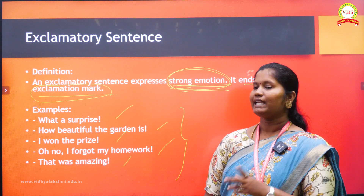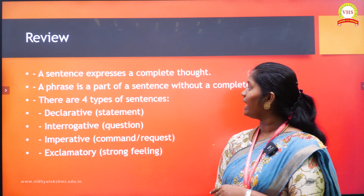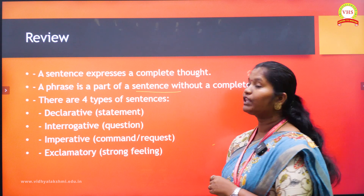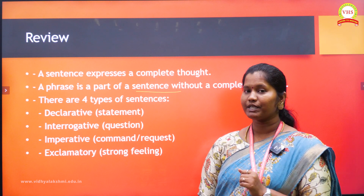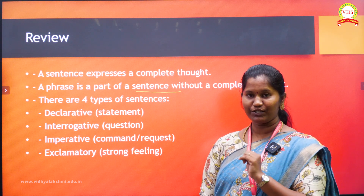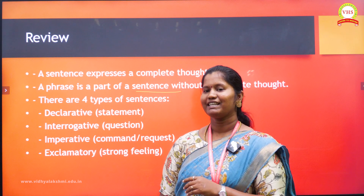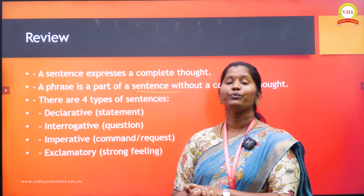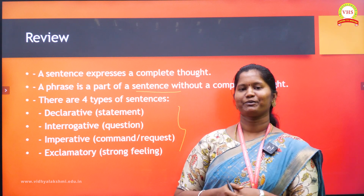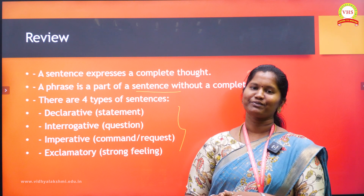Hope you all got it. Let's review what we have learned today. A sentence is a group of words that makes a complete thought. A phrase is a part of a sentence without a complete thought. We have four types of sentences: declarative, interrogative, imperative, and exclamatory. Hope you all understood. Now here is your homework: write one example of each type of sentence and write it in the comments below. Clear? See you in the next video. Bye-bye.